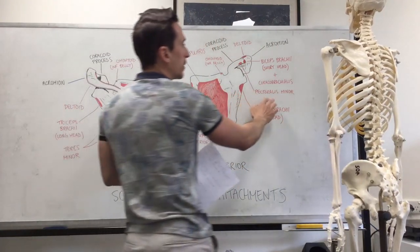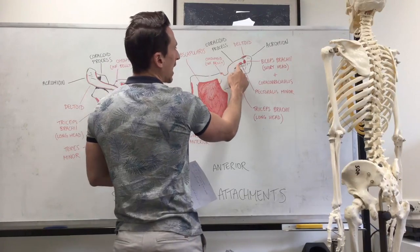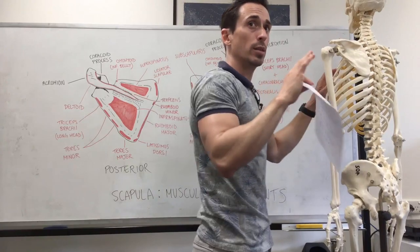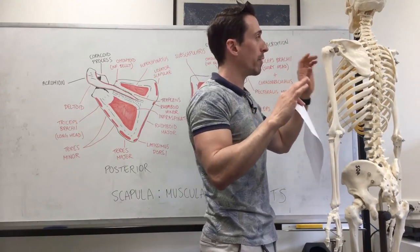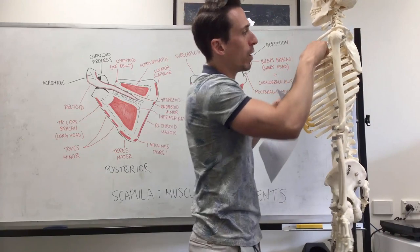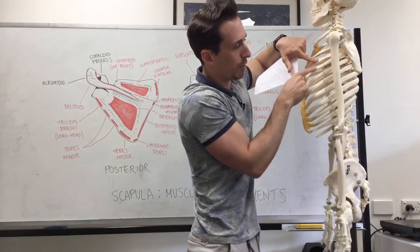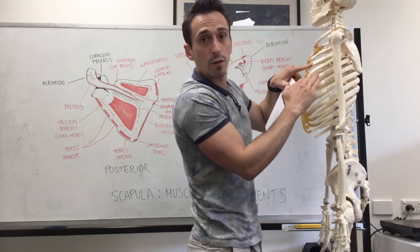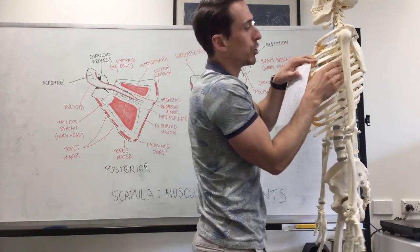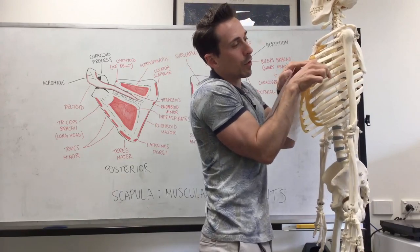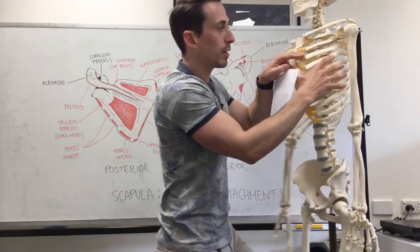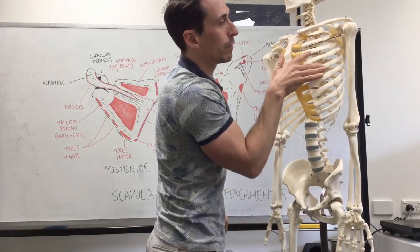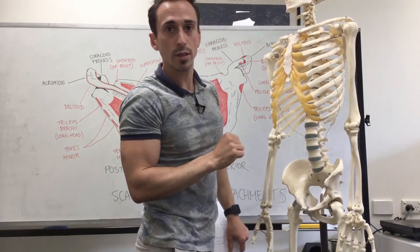The last muscle is pectoralis minor. It has an attachment at the coracoid process of the scapula. Its origin is ribs three to five, and these fibers converge upward to the coracoid process.